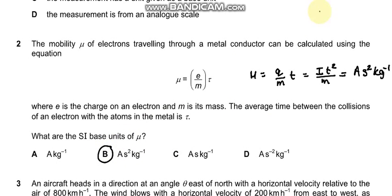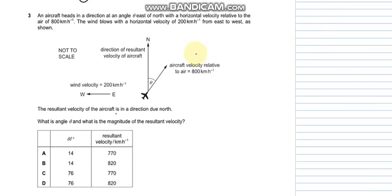Question number 3 says there is an aircraft which has a velocity relative to air of 800 km per hour with angle theta from north, and the wind velocity is 200 km per hour in the westward direction. The resultant velocity of the aircraft is in a direction due north.